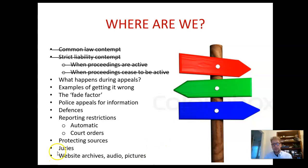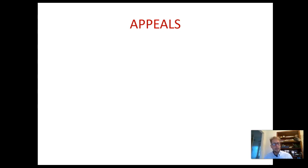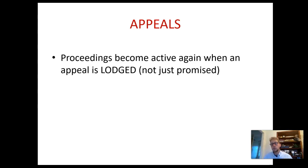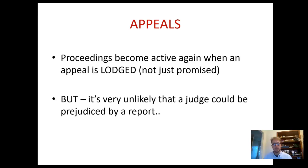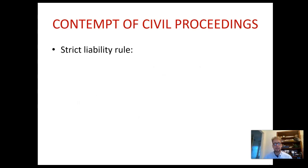We went on to look at when proceedings become active and when they cease to be active. Another issue to think about is if there's an appeal — proceedings become active again. You need to be really on your toes to know when proceedings become active, cease to be active, and then possibly become active again on appeal. An appeal only becomes active once the appeal has actually been lodged with the court — not just when someone says they're going to appeal. Because appeals are heard by judges and not juries, it's very unlikely you'll have a great risk of causing contempt on appeal, but just be aware that a case can become active again even after it's been heard initially by a court.